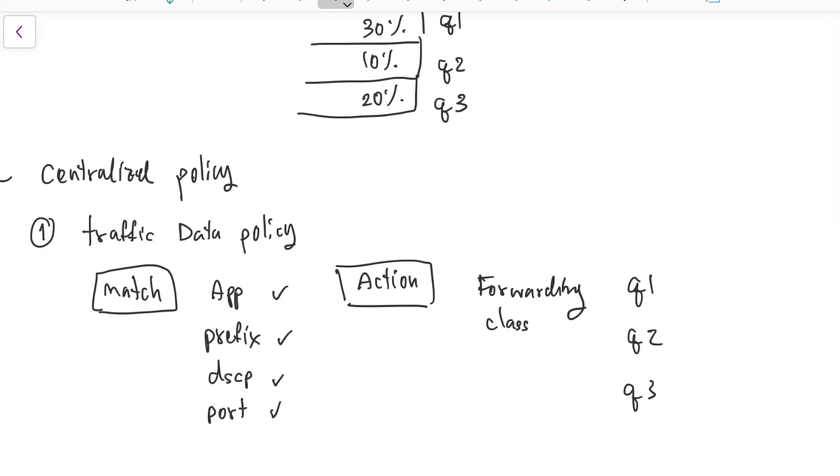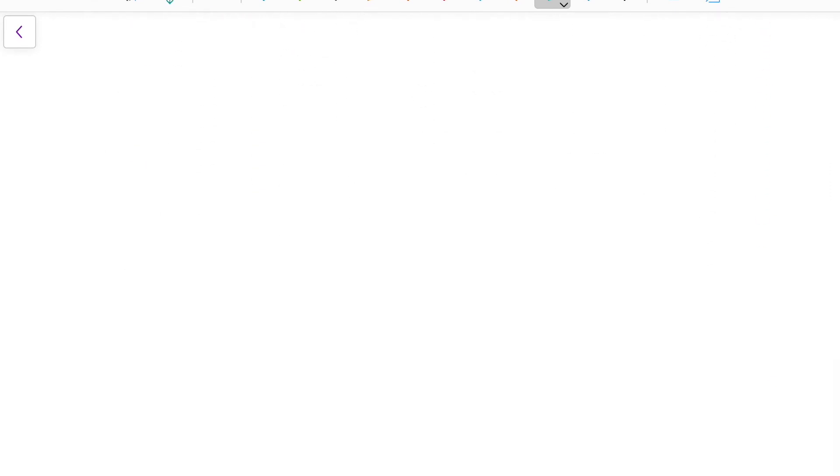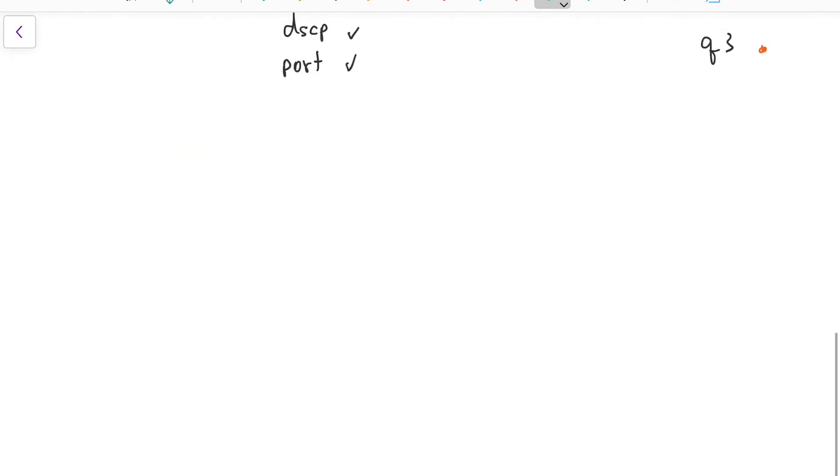Action is we want to put those matching statements into the forwarding class. Then we're going to put those applications to the queue. For example, like voice traffic, action is going to be to the forwarding class Q0, or video to the forwarding class Q1. This is the centralized policies. Now we have localized policies and centralized policies already.